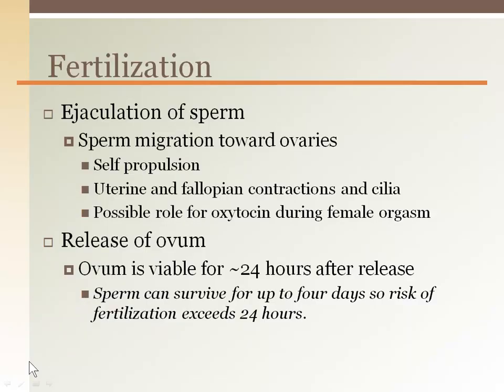For fertilization to occur, both an egg and sperm must combine. During intercourse, ejaculation of semen allows sperm a protective environment to enter the uterus, then self-propel themselves to the uterine tubes. The release of oxytocin during the female orgasm may facilitate sperm migration.